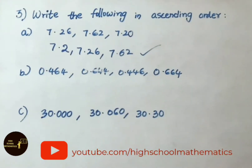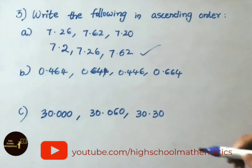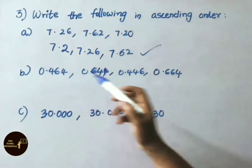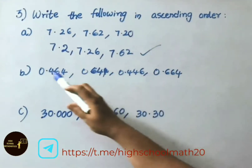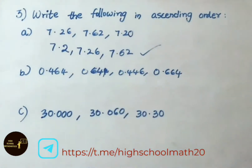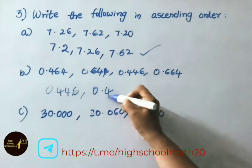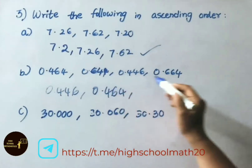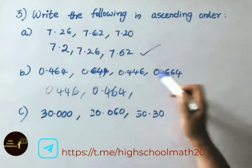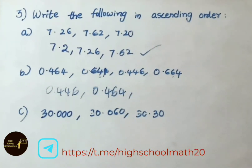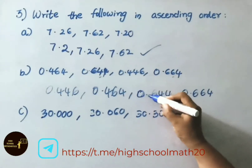See question B: 0.464, 0.644, 0.446, and 0.64. Compare 0.464 and 0.446 — the first digits after the decimal are the same (0.4), so compare the next two digits: 46 versus 44, so 0.446 is smaller. Then 0.464. Now compare 0.644 and 0.664 — the tenths place is the same, but in the hundredths place 4 is less than 6, so 0.644 comes before 0.664. Ascending order: 0.446, 0.464, 0.644, 0.664.